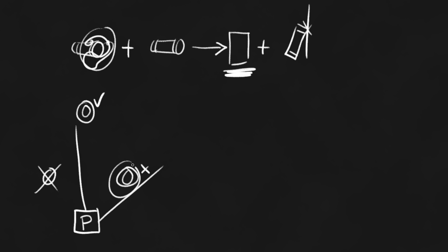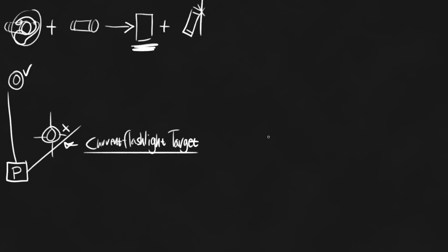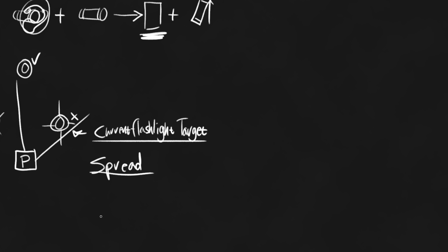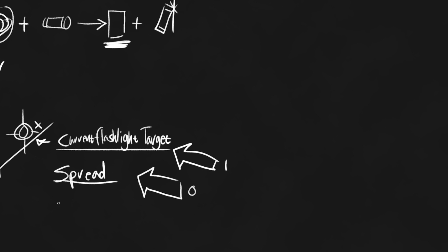Once we have a valid target, all we have to do is cache that node for a period of time, and that will be our current flashlight target. We do need to get our spread, and the spread is going to be calculated exactly like it is for the right hand. Then we're just going to cache it, and we're going to use that later to blend in and out of the targeting system. Once we have the spread, we now need to have a weight — this will be how much we're looking at the target versus how much we're just defaulting to the normal spread, with one being the target and zero being normal animation.